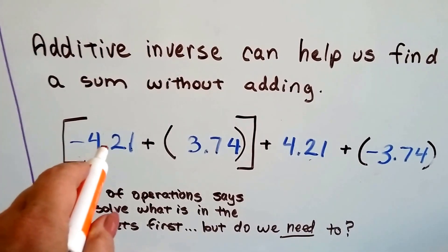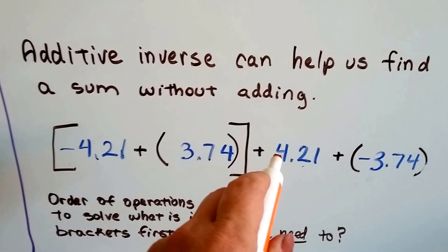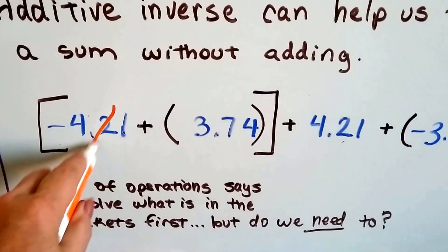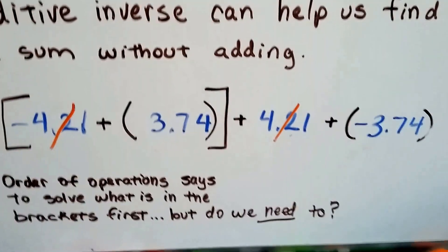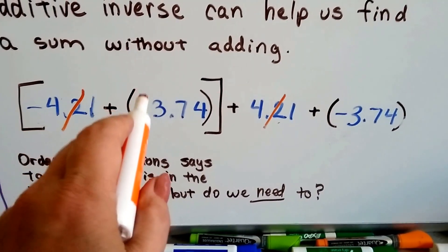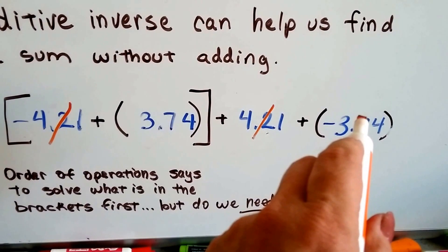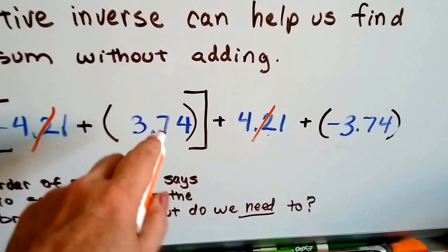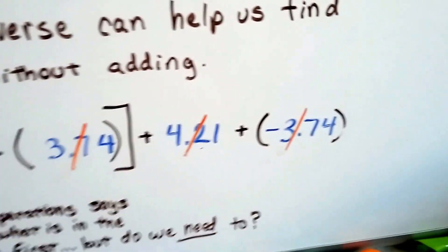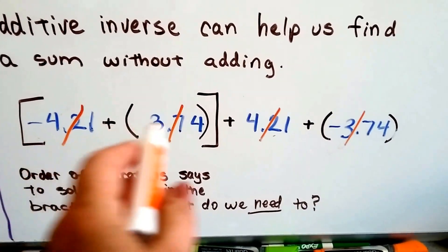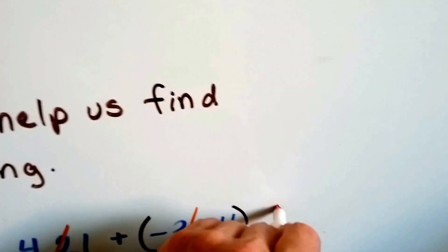I see a negative 4.21 added to a positive 4.21. So that's going to eliminate these two, isn't it? And then what do we see? A positive 3.74 and a negative 3.74 to be added together. Well, they eliminate each other too. And you know what? This whole big long equation is just zero.